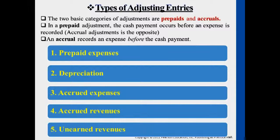There are five categories of adjusting entries. We talked about prepaid expenses and salary payments under accrued expenses. The other categories include depreciation, accrued revenues, and unearned revenues. Generally speaking, these five categories are either a type of prepayment — like prepaid expenses for rent or insurance — or a type of accrual: accumulated revenue or accumulated expenses. Depreciation is also considered a prepayment: you purchase an asset upfront, then later recognize the portion that is no longer useful.